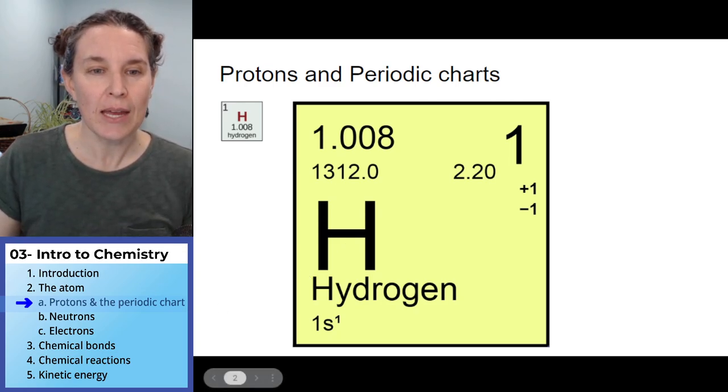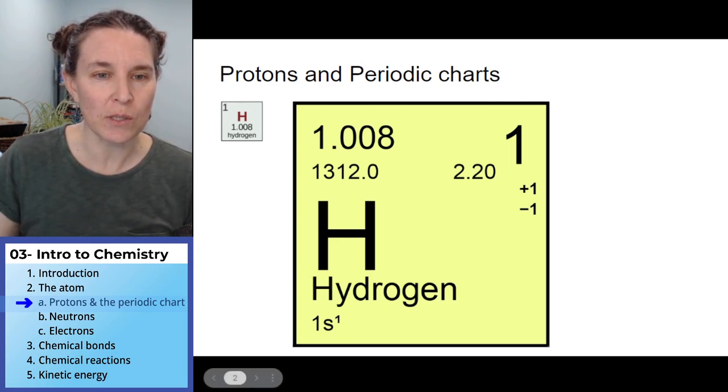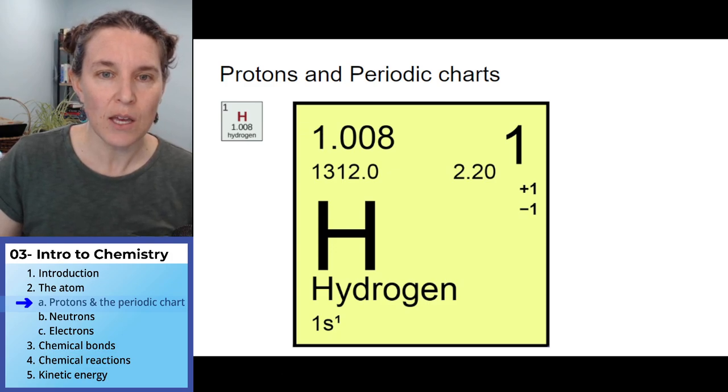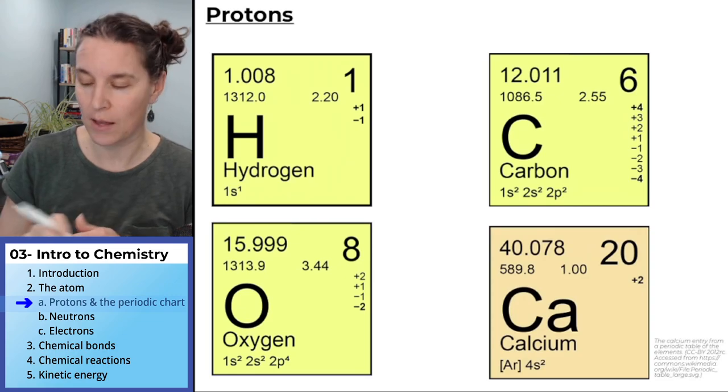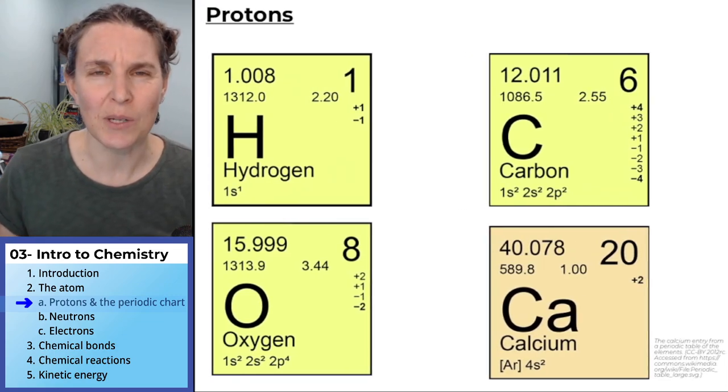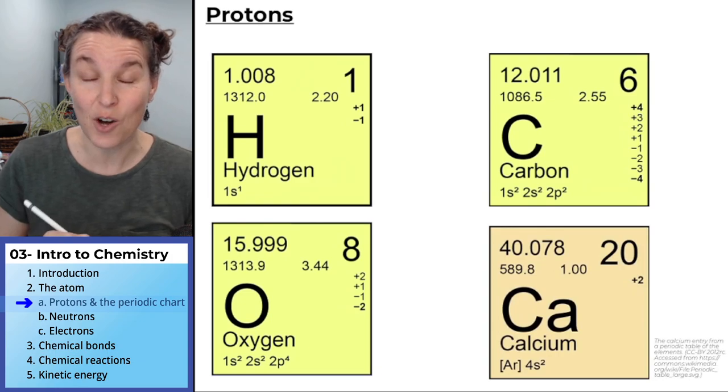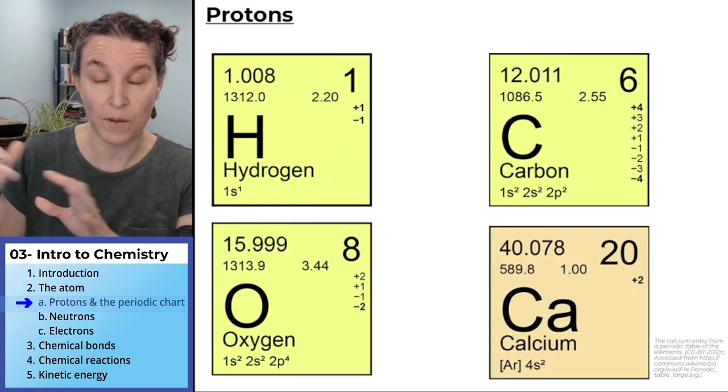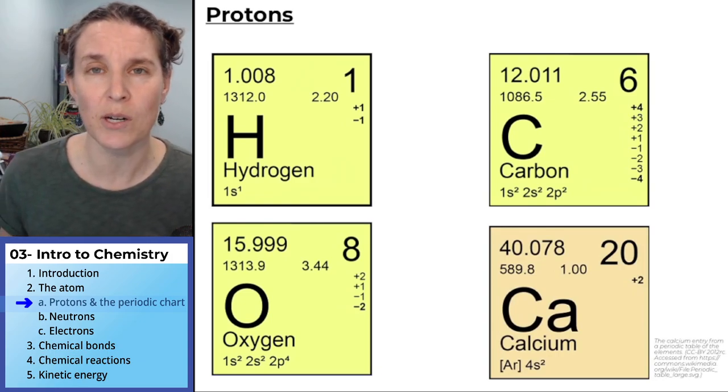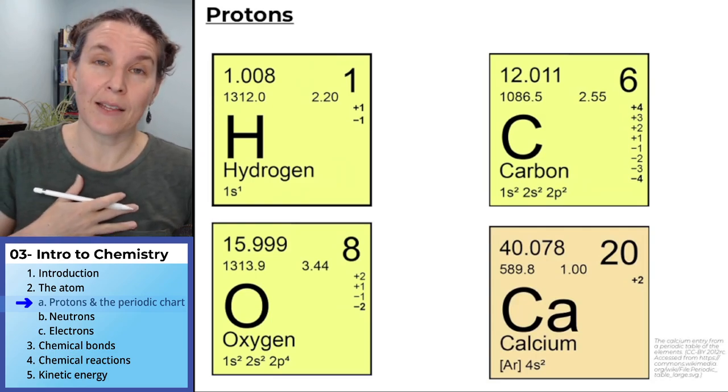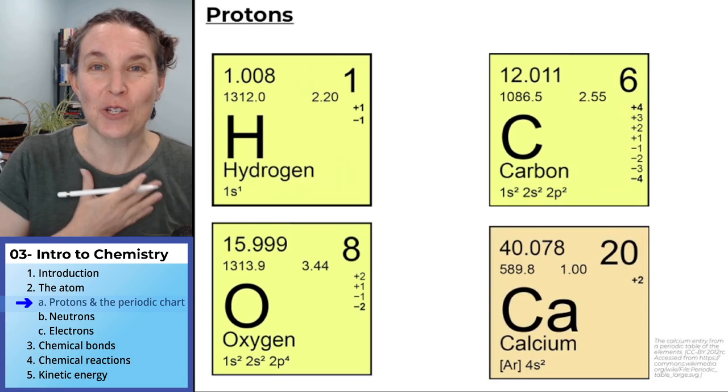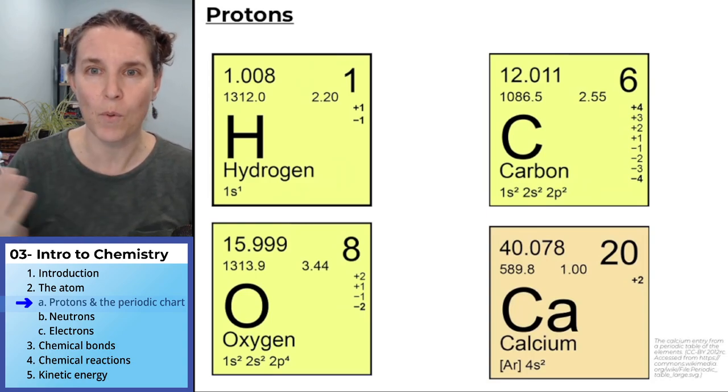Now I'm going to go back and we're just going to do a little practice here. I've pulled four different elements. There are actually more than 119 elements, and I think there are more that were not included in that periodic table.